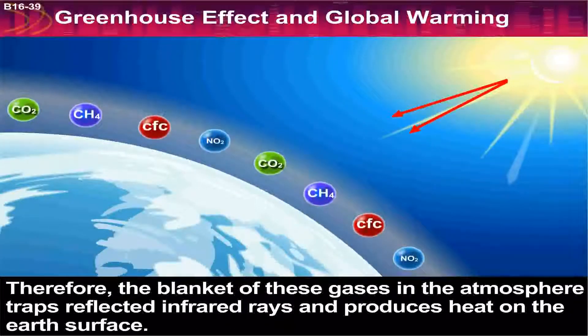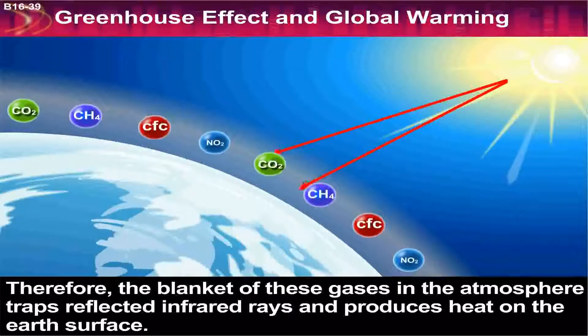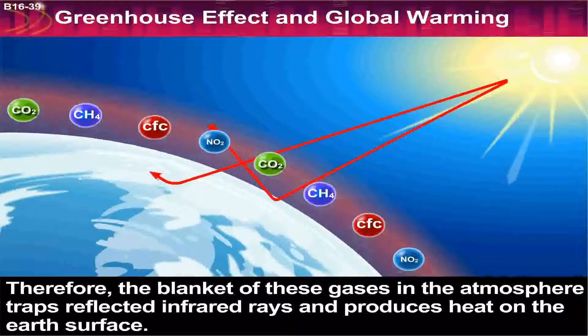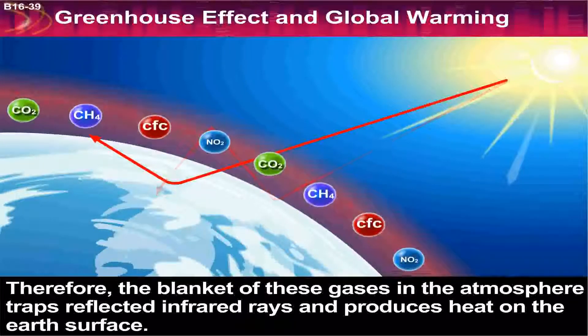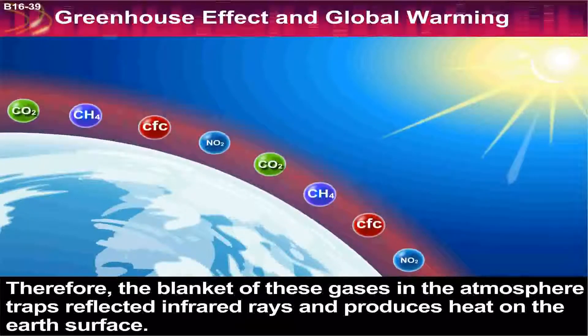Therefore, the blanket of these gases in the atmosphere traps reflected infrared rays and produces heat on the earth's surface.